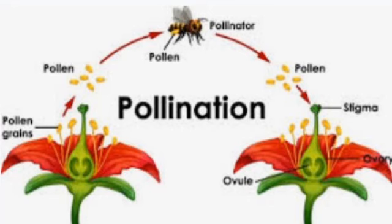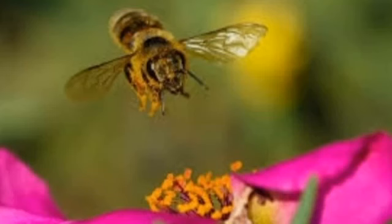Fertilization: The ovules or egg cells in the ovary are fertilized by the pollen grains that have fallen on the stigma; this process is called fertilization. Seeds are formed from fertilized ovules, and the ovary develops into a fruit.